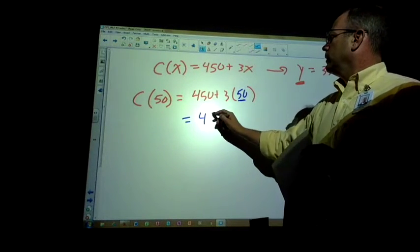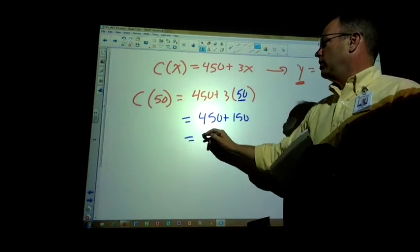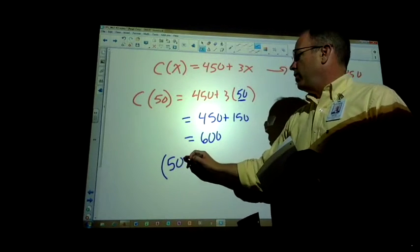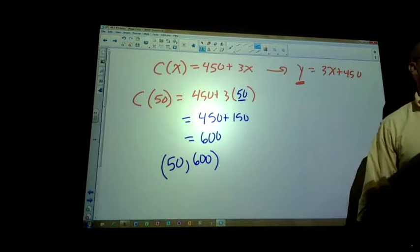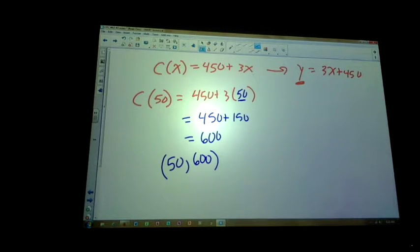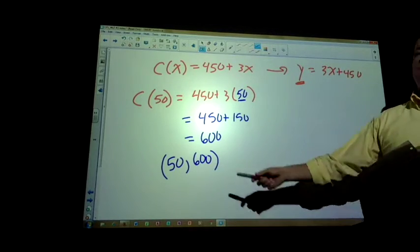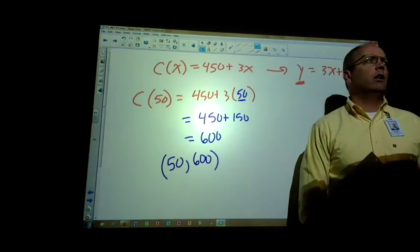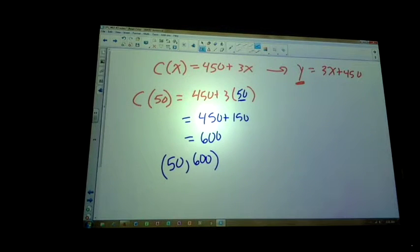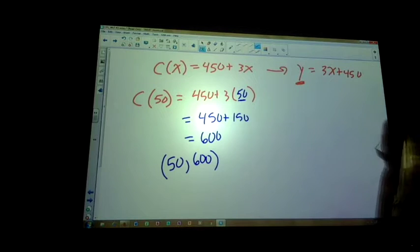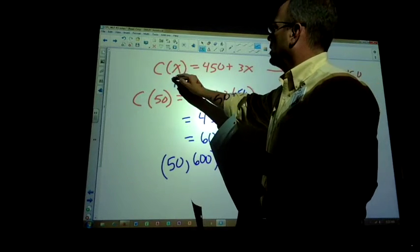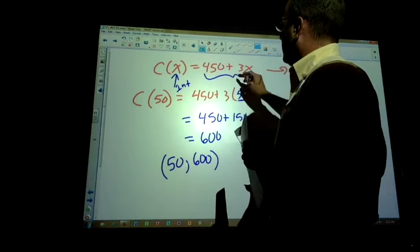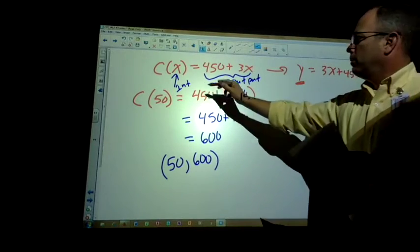50 in this case is representing the candles. You get 450 plus 150, which is 600. So the cost of 50 candles is $600. Interpret C(50) in the context of the problem. If I make 50 candles with this particular equation, it costs me $600. That's a business thing. Make sense?